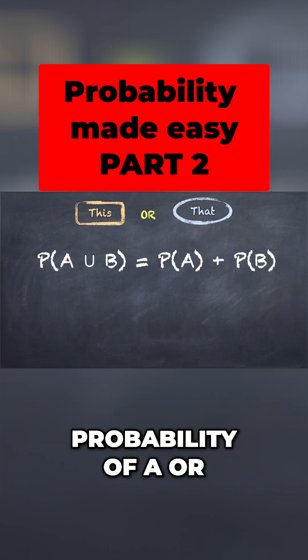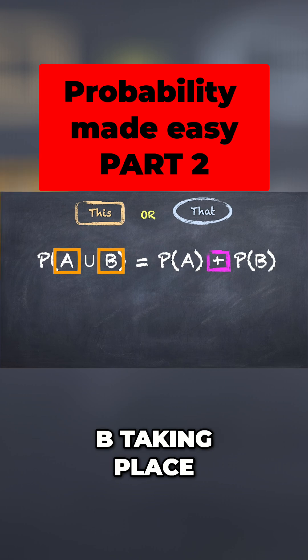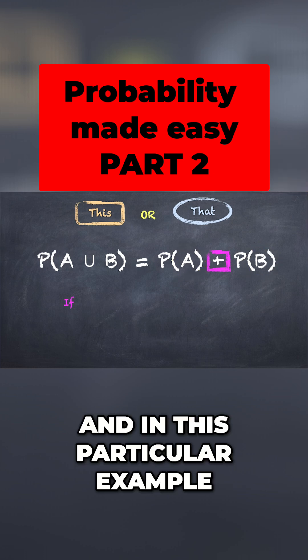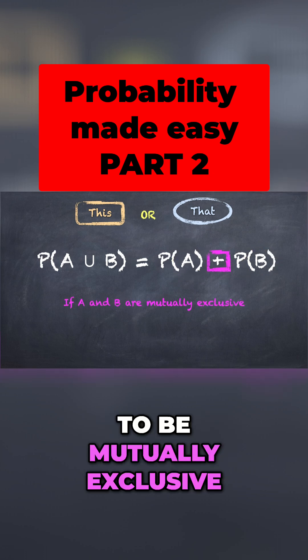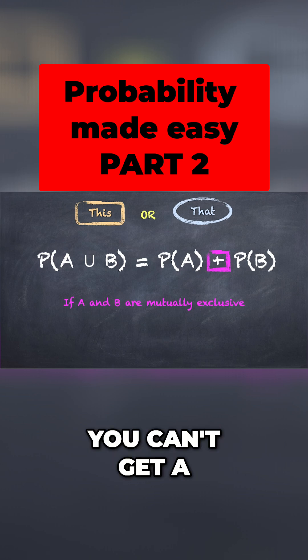The lesson here is that the probability of A or B taking place, so either event can happen to meet the criteria, is the same as adding the probability of A and B. And in this particular example, for this to be true, the events have to be mutually exclusive. With one throw of the dice, you can't get a 2 and a 3.